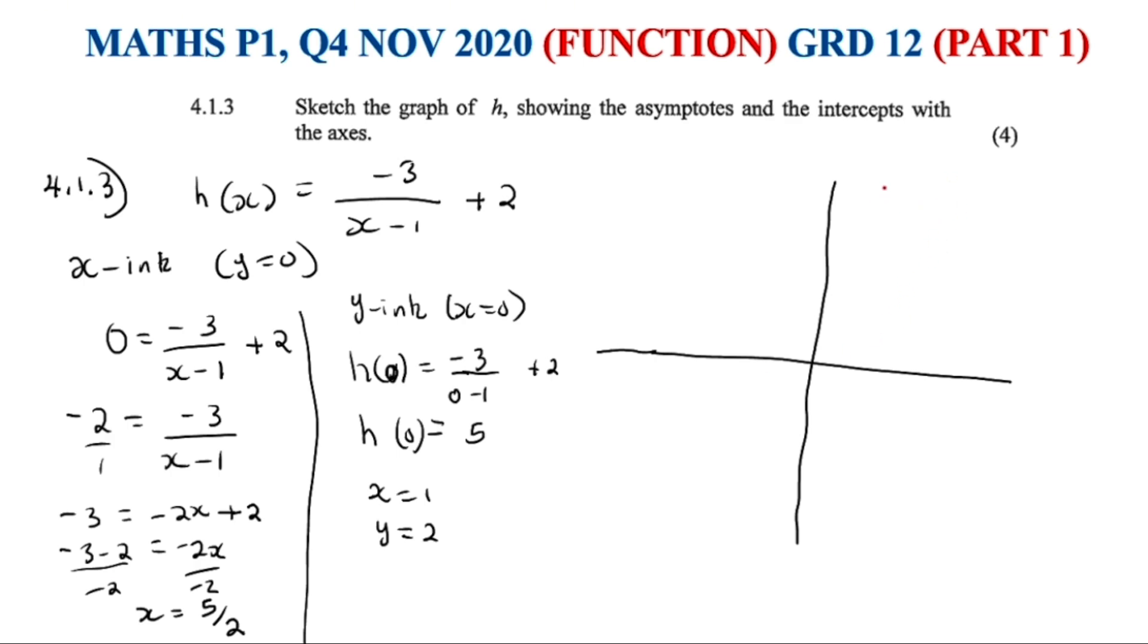Line of asymptotes, we know that x is going to be 1, there you go, it's 1. Then here is going to be 2, this is 2, therefore this is 1. And then what else do we need? We also need the x intercept. X intercept is 5 over 2, so our 5 over 2 is somewhere there. Therefore, y intercept is 5, it's somewhere there.